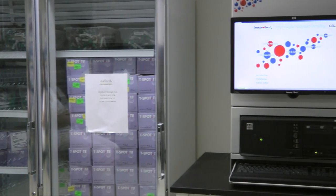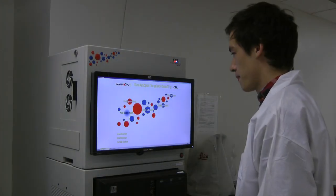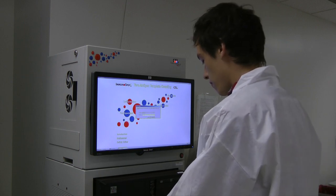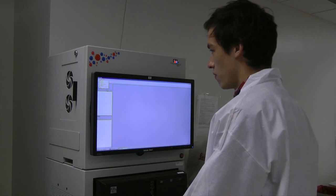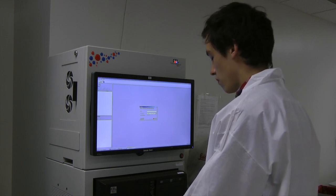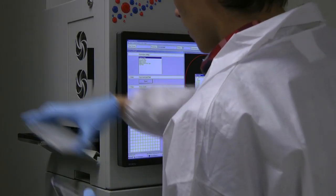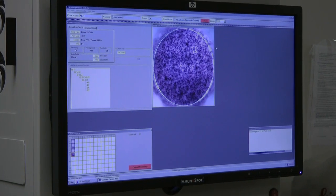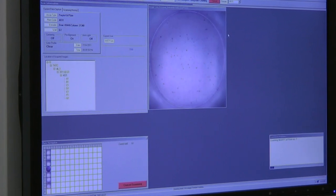An Ellispot plate reader manufactured by CTL is used to count spots on a T-spot TB plate. Software customized by CTL for the T-spot TB assay allows for rapid counting and quality control review of spots. The technologist opens the scan and count application and imports the sample accession numbers from the laboratory information system. The unique plate identifier is entered and the plate is loaded onto the instrument. Spots in each of the 96 wells are counted by the CTL plate reader, a process which takes less than five minutes.